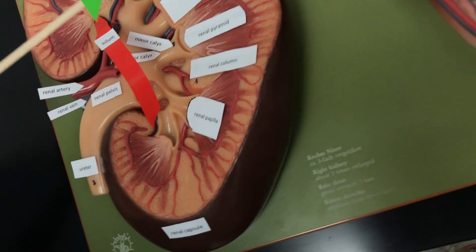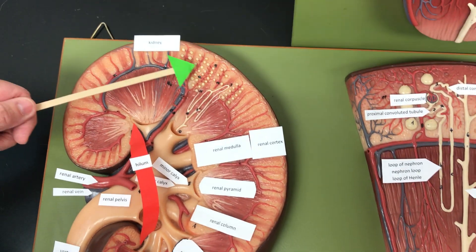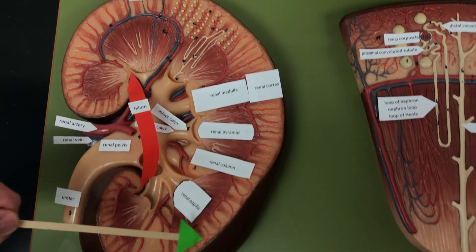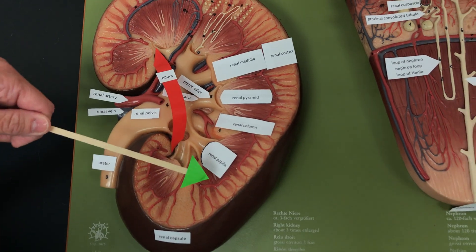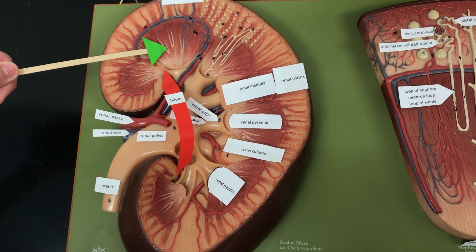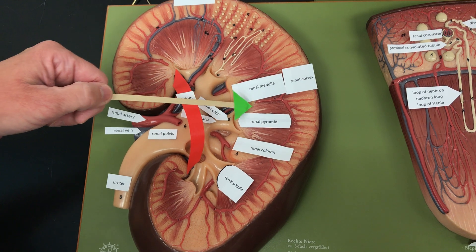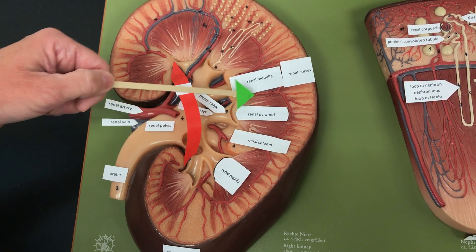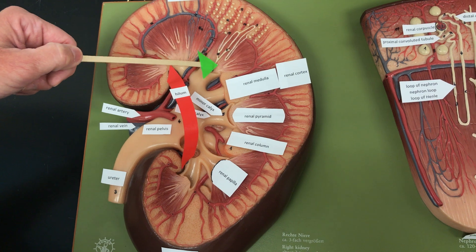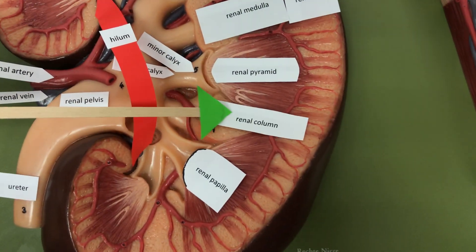Looking at the coronal plane, we can see the renal cortex near the edge. The renal medulla is in the middle. In the renal medulla we have the renal pyramids — I think they look like fish fins. Separating the renal pyramids we have the renal columns.